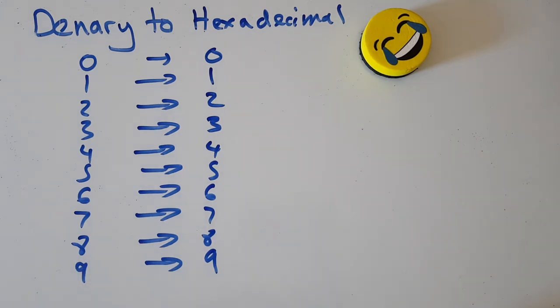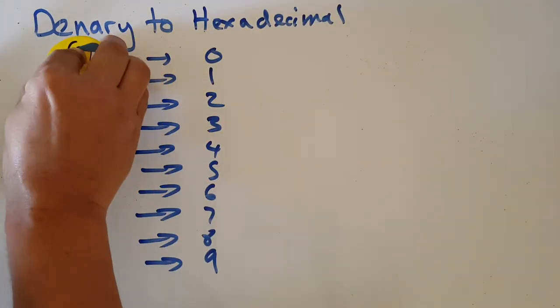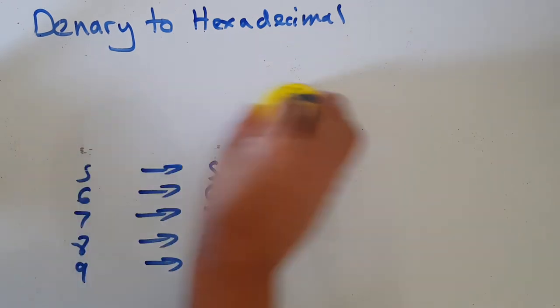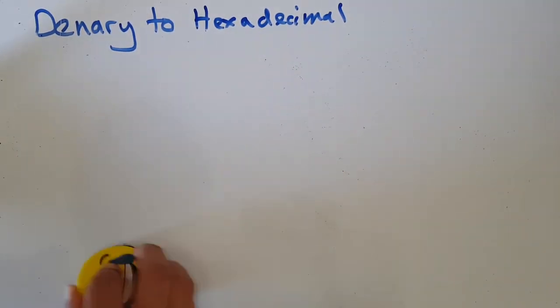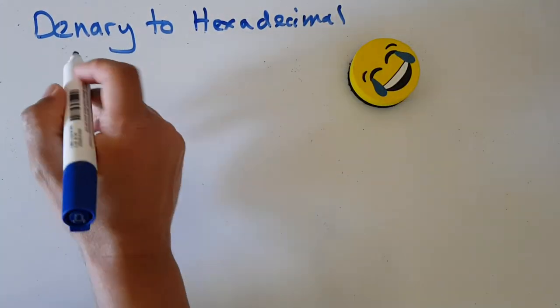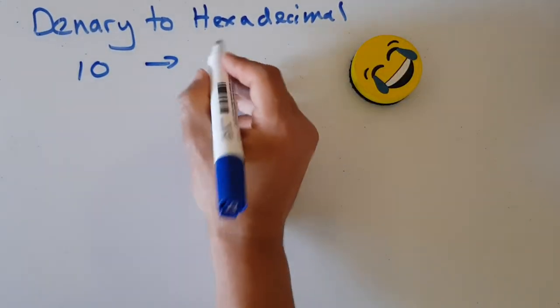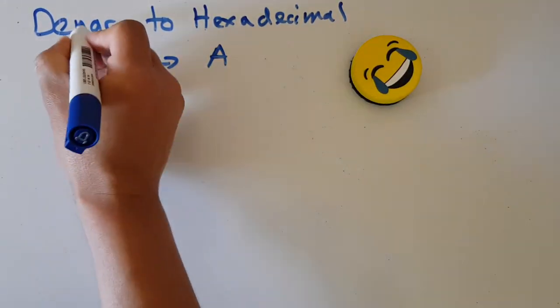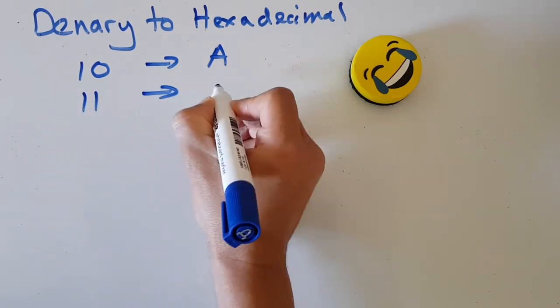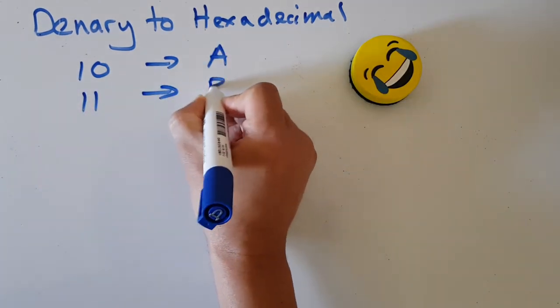It only gets a bit strange now when we get to denary ten. Here's how it works: denary ten converted to hexadecimal is A. Denary eleven is, have a guess, B.